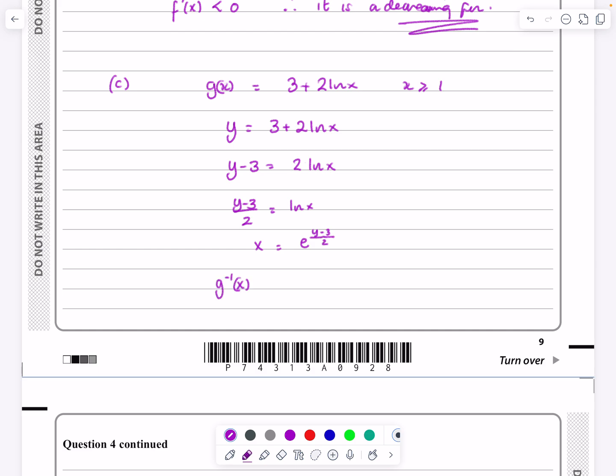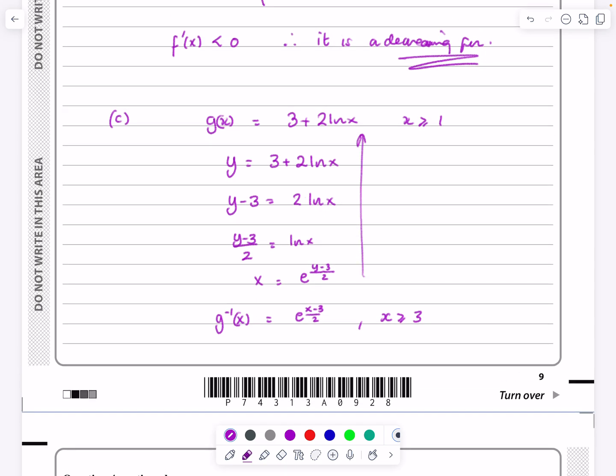So g to the minus 1x, then, is equal to e to the x minus 3 all over 2. You should really say what the range of it is going to be, and it's x greater than or equal to 3. Where do I get that from? The domain of this one is going to be the range of this function.